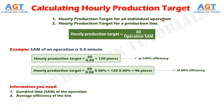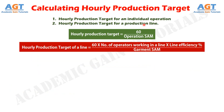Now that we have learned how to calculate hourly production target for an individual operation, let's look into the calculation of hourly production target of a production line. For calculating hourly production target for a production line, use the following formula: Hourly production target of a line equals 60 multiplied by the number of operators working in a line, multiplied by the percentage line efficiency, then all of it is divided by the garment standard allowed minute.